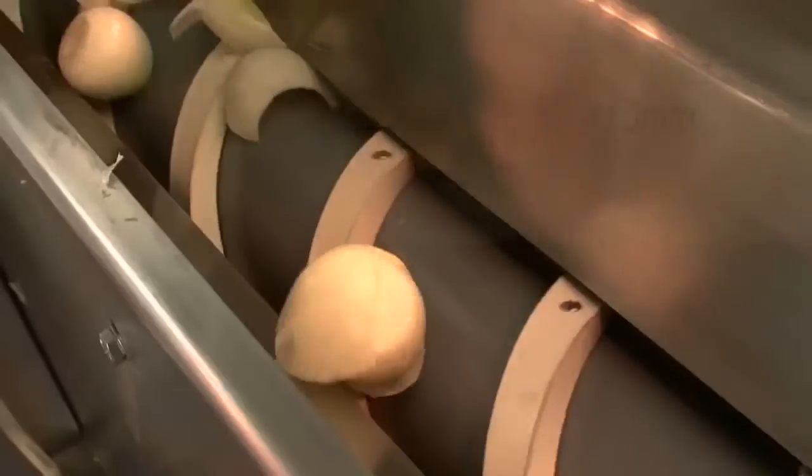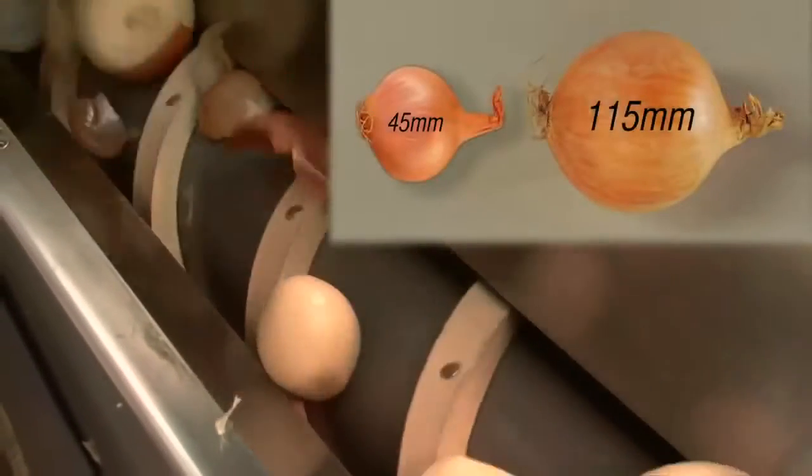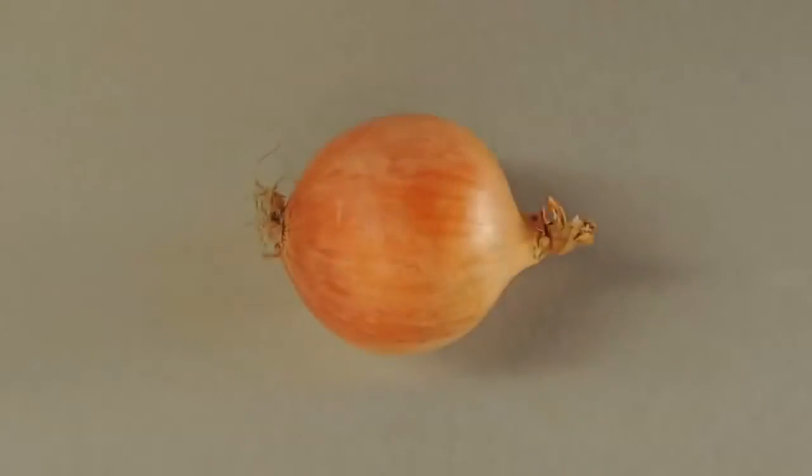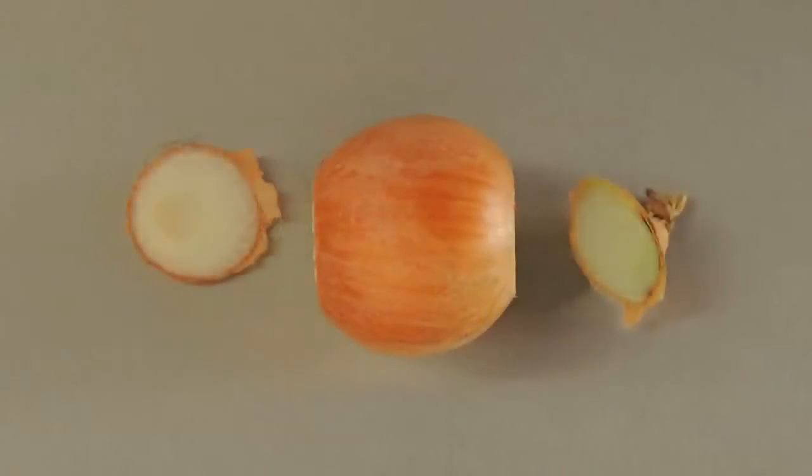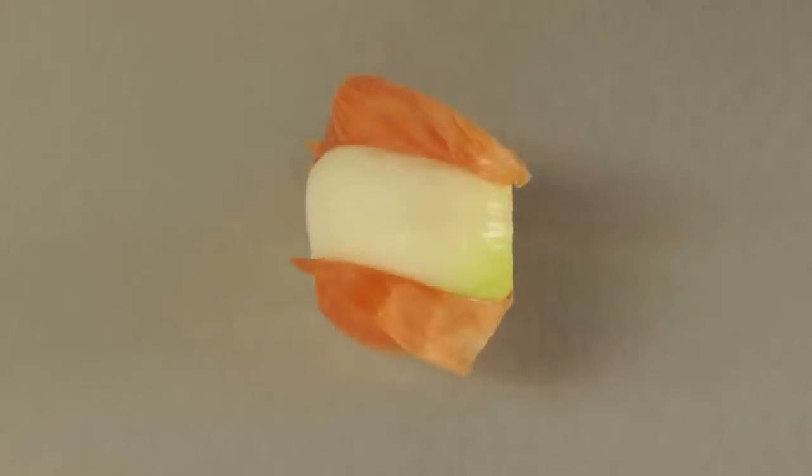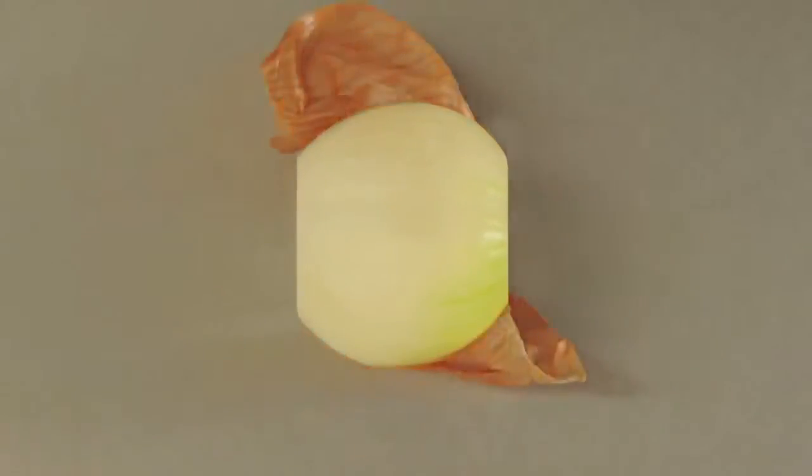This system offers a complete process of 45mm to 115mm diameter onions. It tops and tails the onions in one operation, then slits the outer skin and removes it with compressed air. No change parts are required.